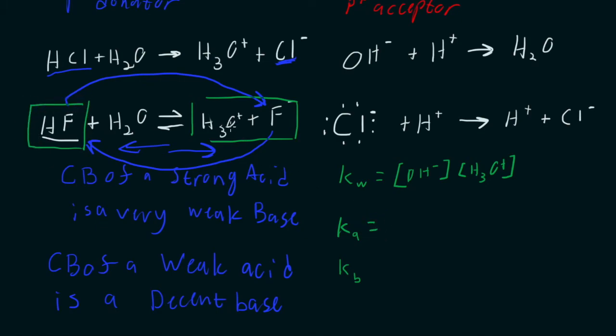And so the way we do this is we take the concentration of our products divided by the concentration of our reactants. Notice we don't put the H2O in here. We don't have that in this equation. The reason for that is that H2O is a liquid. It doesn't have a concentration, so it doesn't get included in this ratio.